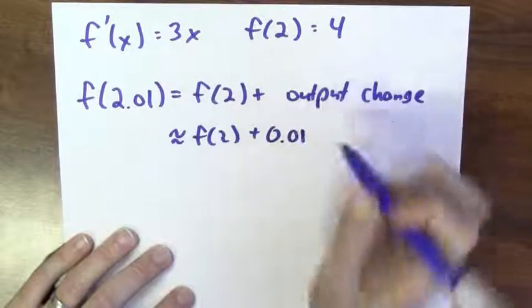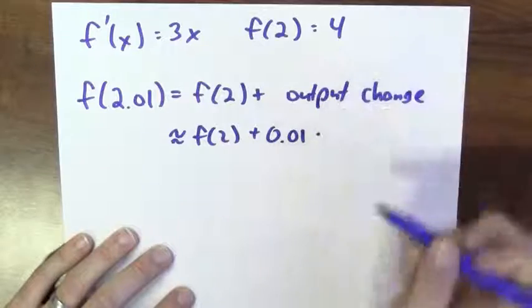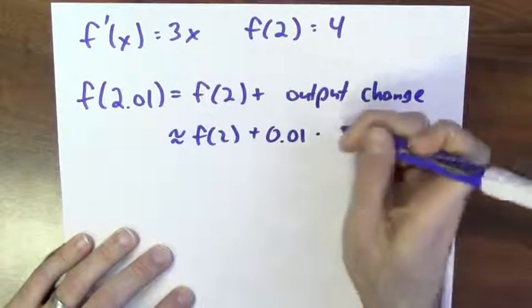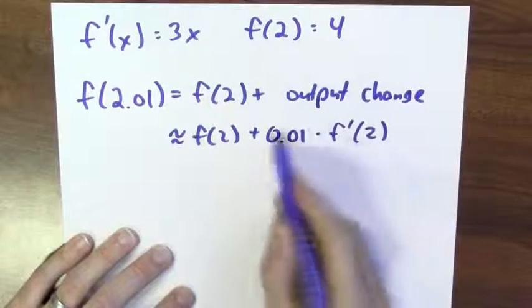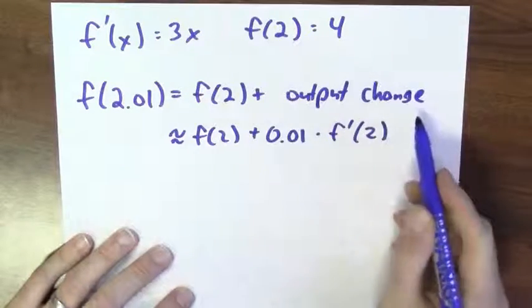So, if I multiply by how much I change the input by the ratio of input change to output change, this should be approximately the true output change.